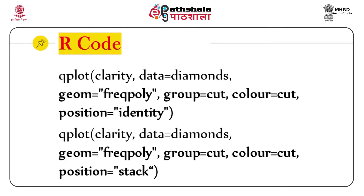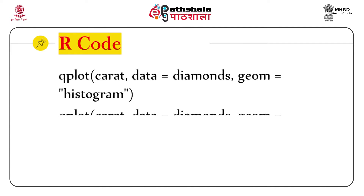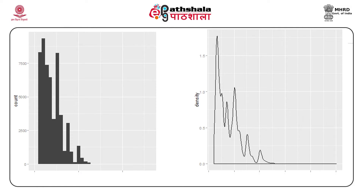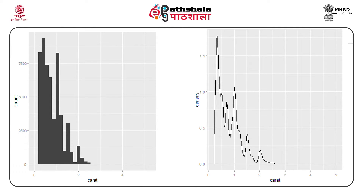Next, consider histograms — another type of diagram we often come across. Histogram and density plots show the distribution of a single variable. Let us see how we can draw a histogram using this new plotting function. Look at the two lines of R code: the first one gives a histogram corresponding to the variable, whereas the second one displays the density plot corresponding to it. Both are meant to show the distribution of the variable. Here is the output.